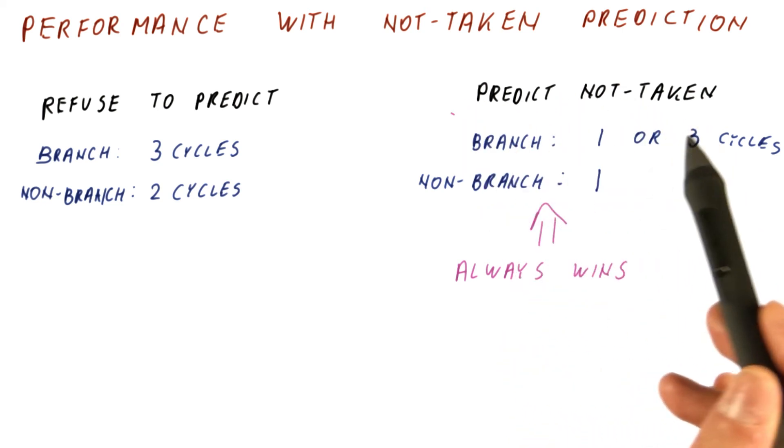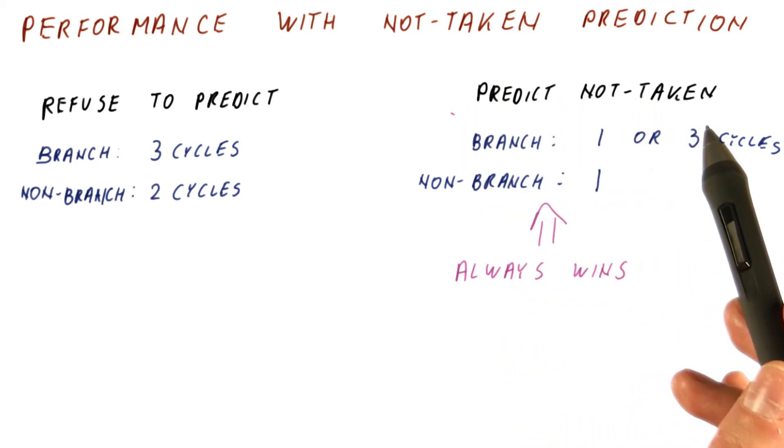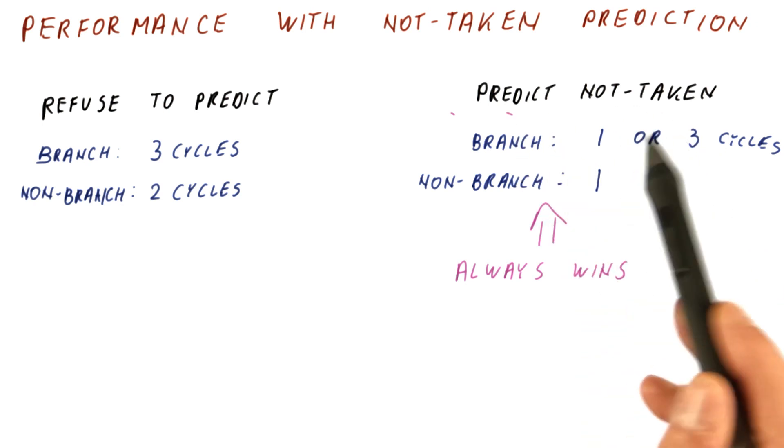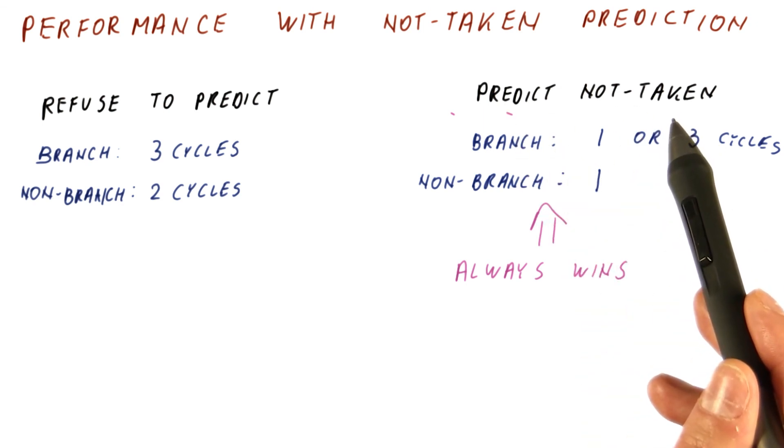Note that this type of prediction is really cheap. All you have to do is increment the PC. You don't actually have to know anything about branches or other instructions. So it's very easy to do it. You have to be able to increment the PC anyway.